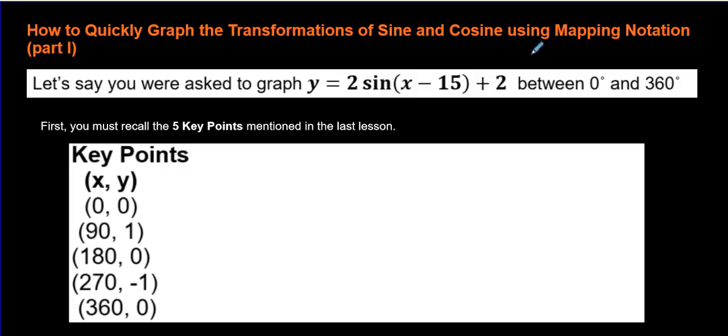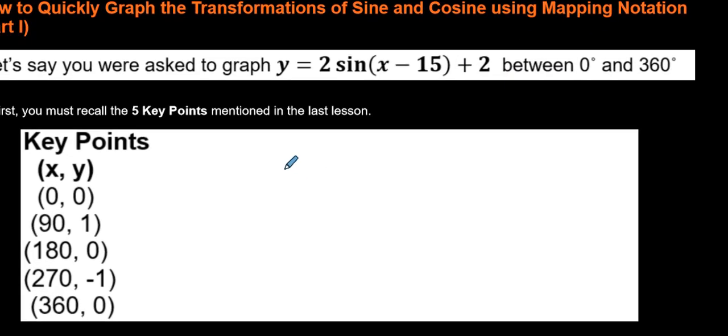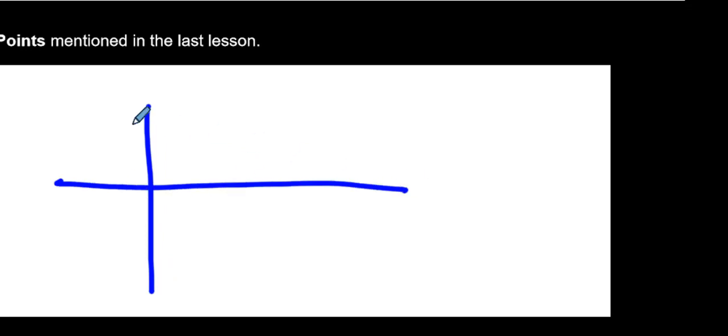This is assuming that you already know what sine and cosine look like, that a cosine curve kind of looks like that, starting at 1 right here. And then if you do things to it, like putting numbers in the front, putting numbers here in the brackets, or putting a number on the end, that it does things to this curve.